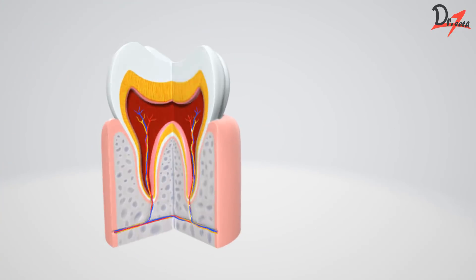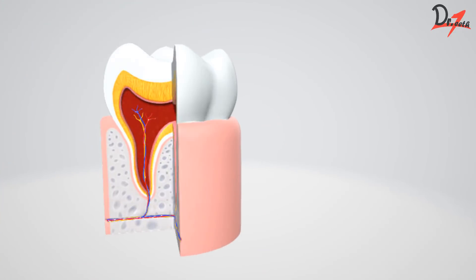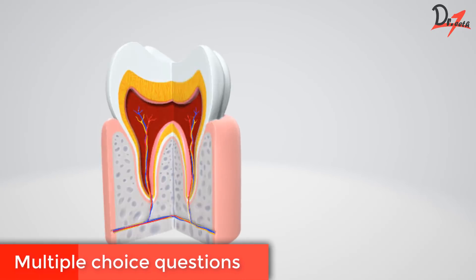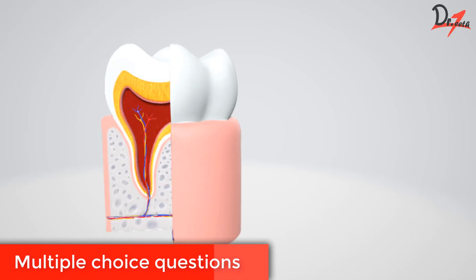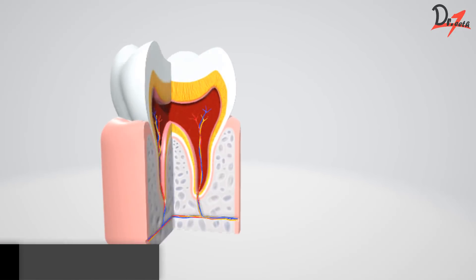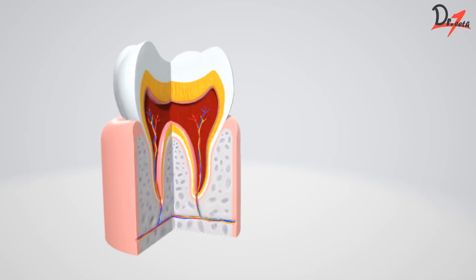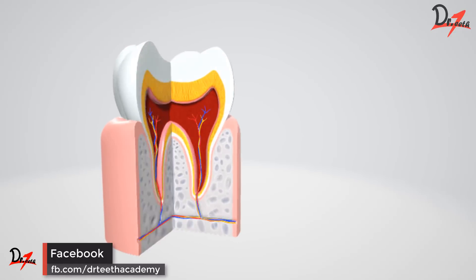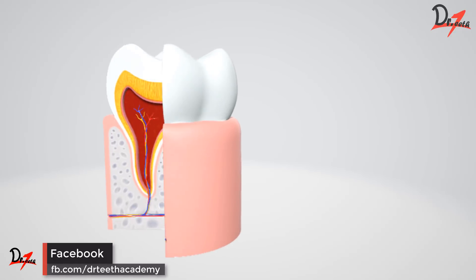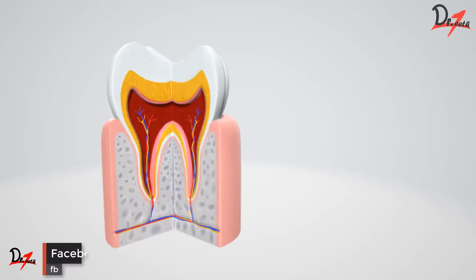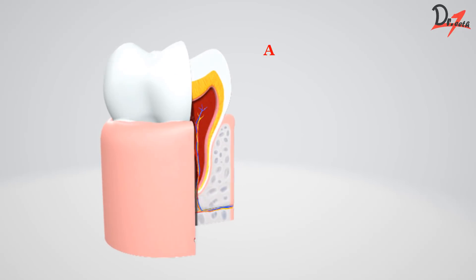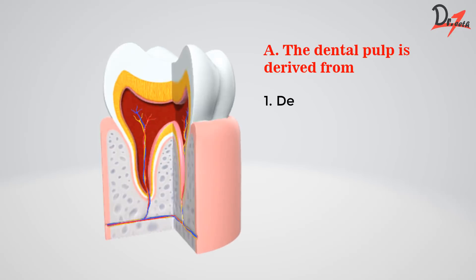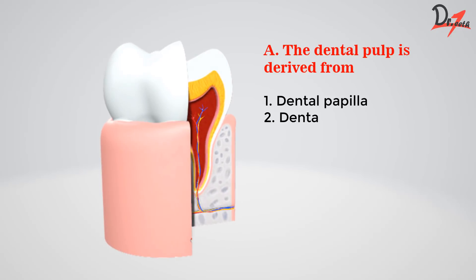These were some of the things present inside the pulp — more details will be covered in upcoming videos. Now let's move on to the multiple choice questions. I will mention the question with options and you have to put the correct answer in the comment section below, and after a few days I will post all the answers in the description. The first question is: the dental pulp is derived from — options are dental papilla, dental sac, odontoblast, or stellate reticulum.